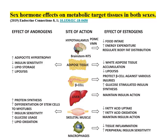Where are the sites of interaction between steroids and metabolism? There are many. Sites of action include the hypothalamus, adipose tissue, the pancreas, the liver, muscle, and the immune system — just some examples.